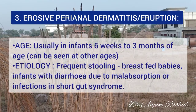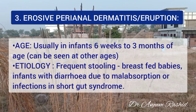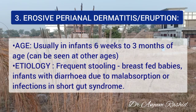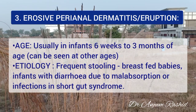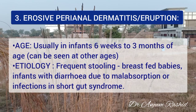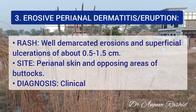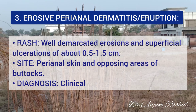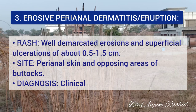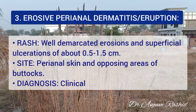Another diaper area eruption is erosive perianal dermatitis. It is usually seen in infants 6 weeks to 3 months of age, but can be seen at other ages. It is due to frequent stooling, either in breastfed babies or children with diarrhea due to malabsorption, infection, or short gut syndrome. The lesions consist of well-demarcated erosions and superficial ulceration of about 0.5 to 1.5 cm, typically seen in the perianal area and the opposing areas of the buttock. It is basically a clinical diagnosis.